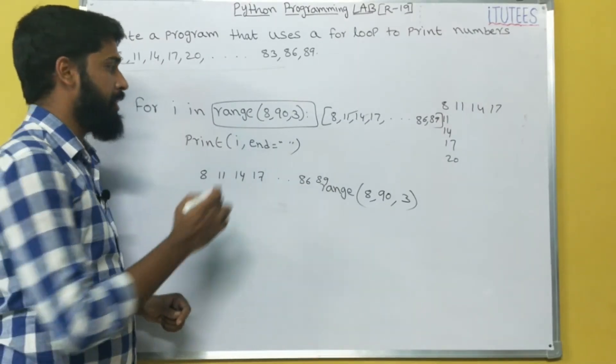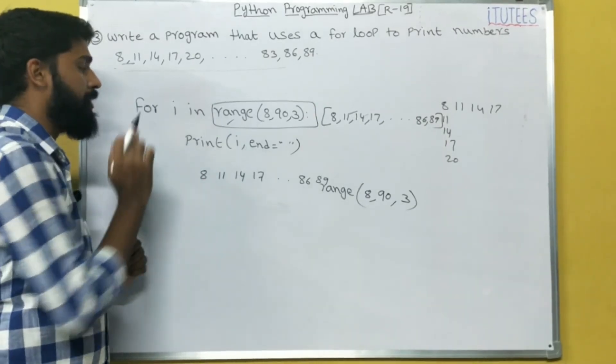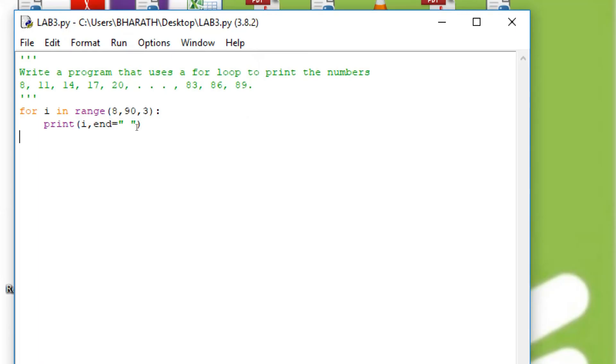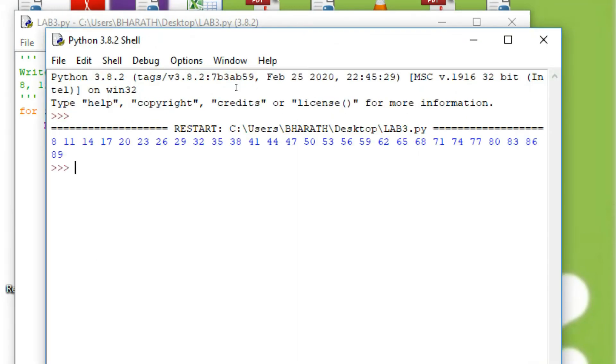I hope you all understand what is the purpose of range and how we can execute with the help of for loop. Now we see the execution of the program. So this is the output.